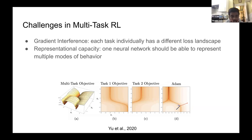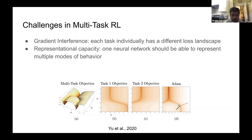This paper further analyzes the properties that make this difficult, but it conveys the intuition: there's interference of gradients between different tasks. The second big challenge is representational capacity. You could just train a different policy for each task, but the challenge of multitask learning is having one policy — one neural network — that should be able to represent all modes of behavior.